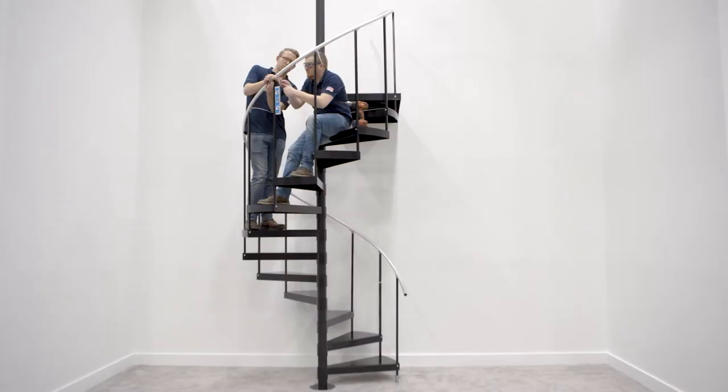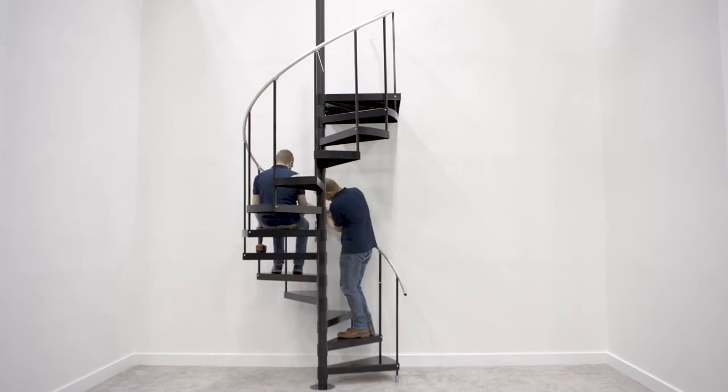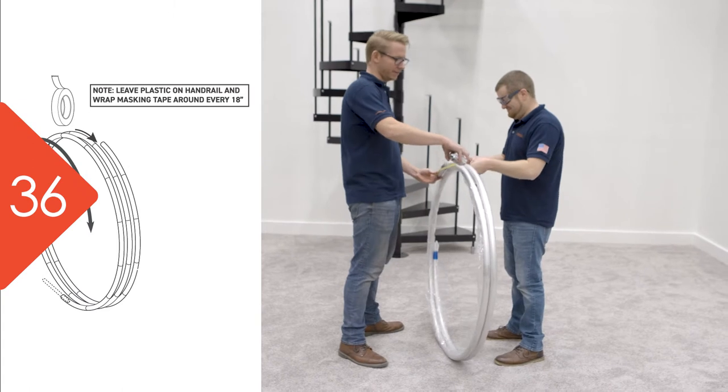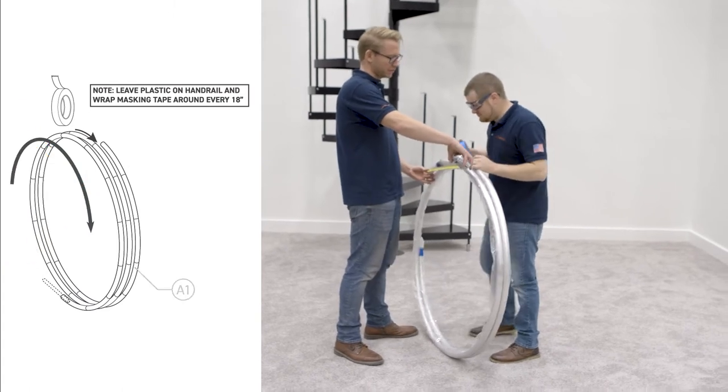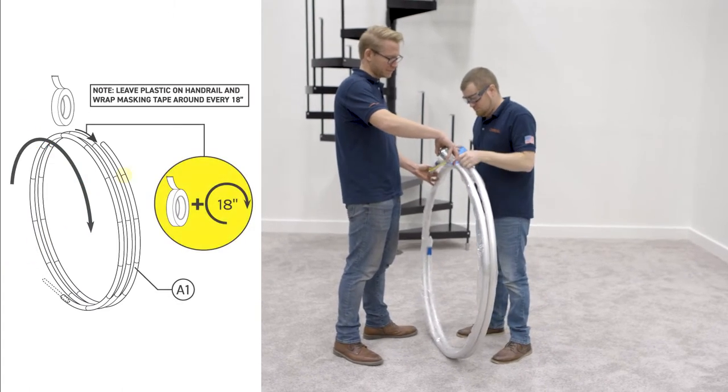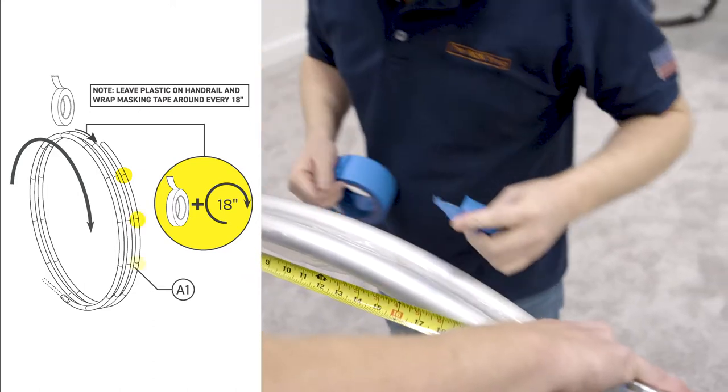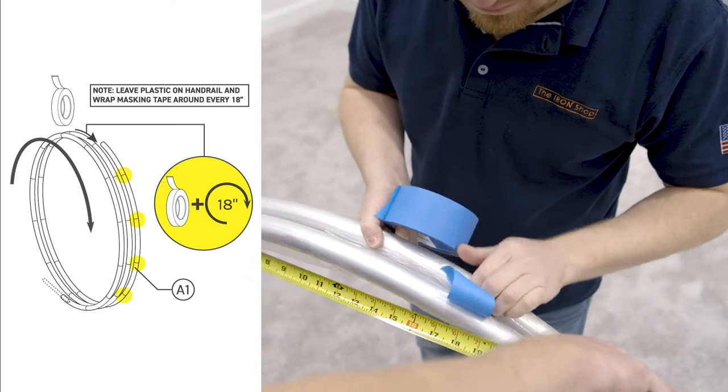Please consult your instruction manual if you have selected vinyl handrails. Step 36. Do not remove the plastic on the handrail coil A1. Start by wrapping a piece of tape around the handrail every 18 inches.